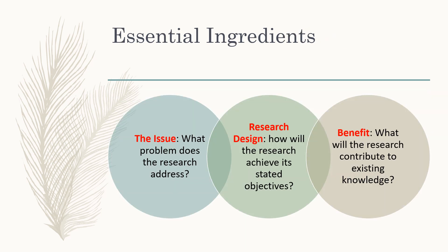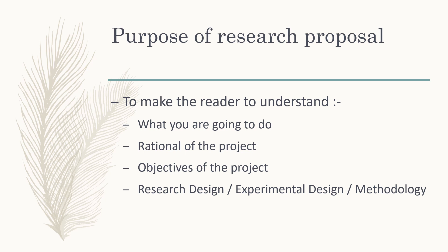There are three essential ingredients in your proposal. The first one, you must have an issue — what problem does the research address? The second one, you need a research design — how will the research achieve its stated objective? The last but not least is the benefit — what will the research contribute to existing knowledge or to society? The purpose of the research proposal is to make the reader understand what you are going to do, the rationale of the project, the objective of the project, and the research design or methodology you are going to use to achieve the objective.